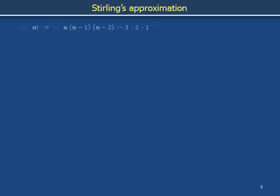Recall that n factorial denotes the product of factors starting from n and descending by steps of 1 all the way down to 1 — meaning n times n minus 1 times n minus 2, and so on, all the way down to 3 times 2 times 1.